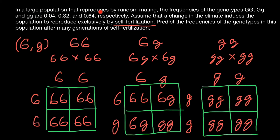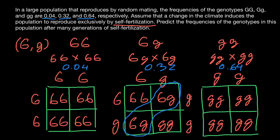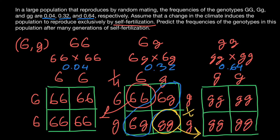Now let's look at our problem again. We have the following genotype frequencies: the frequency of the homozygous dominant genotype is 0.04, the frequency of the heterozygous genotype is 0.32, and the frequency of the homozygous recessive genotype is 0.64. After one cycle of self-fertilization, the heterozygous cross produces 25% homozygous dominant and 25% homozygous recessive in the progeny, which we add to the existing frequencies — one quarter each.